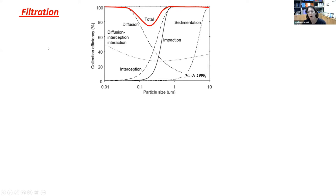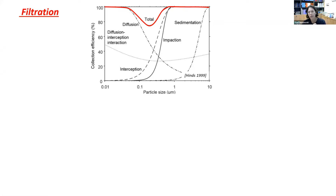Filtration is the most common and simplest technology for treating air pollution, focusing mainly on the particulate phase. As you can see in this figure presenting collection efficiency as a function of particle size, filtration involves several processes — diffusion, impaction, and interception. As a result of combining these processes, the most challenging size category to collect by filtration is around 0.2–0.3 microns, lying between the high efficiency of diffusion and the higher efficiency of impaction and interception.